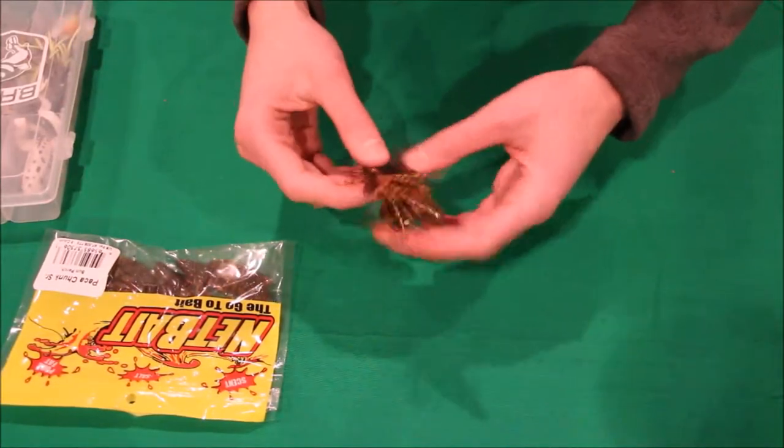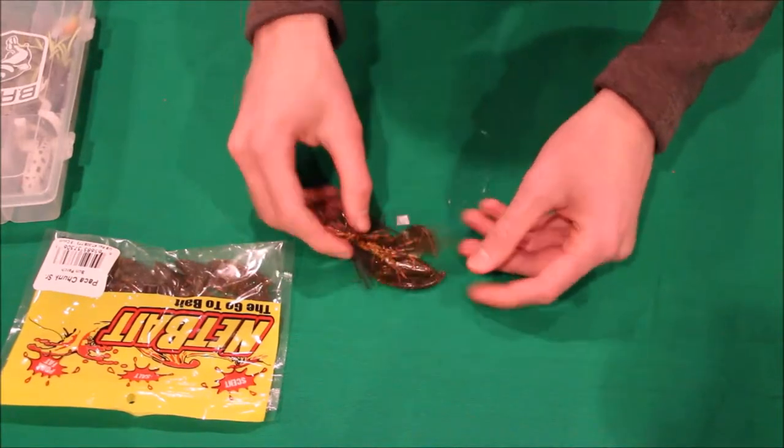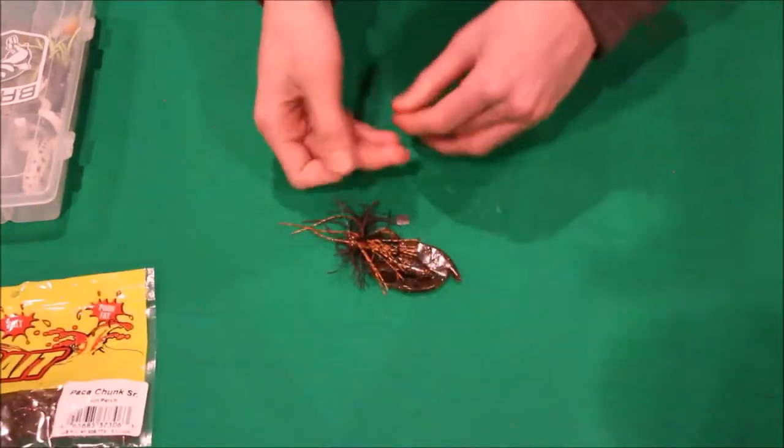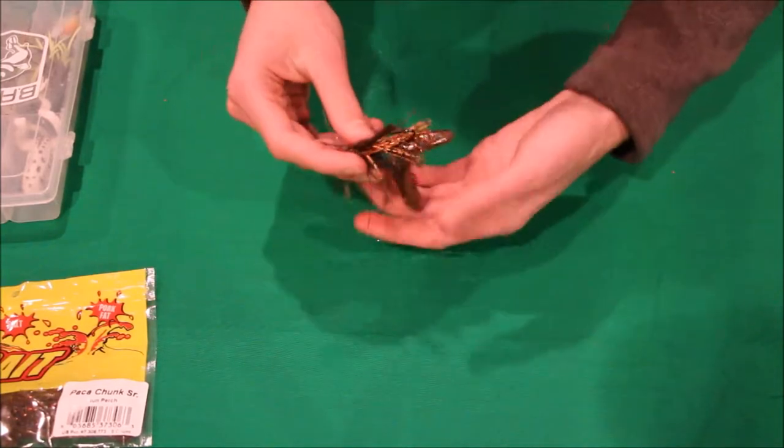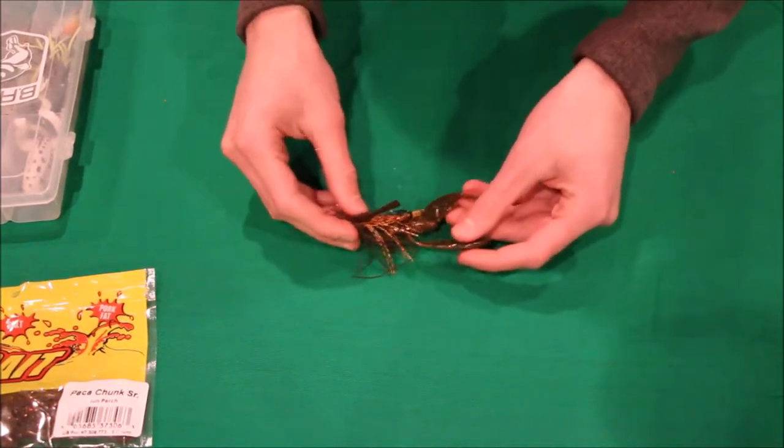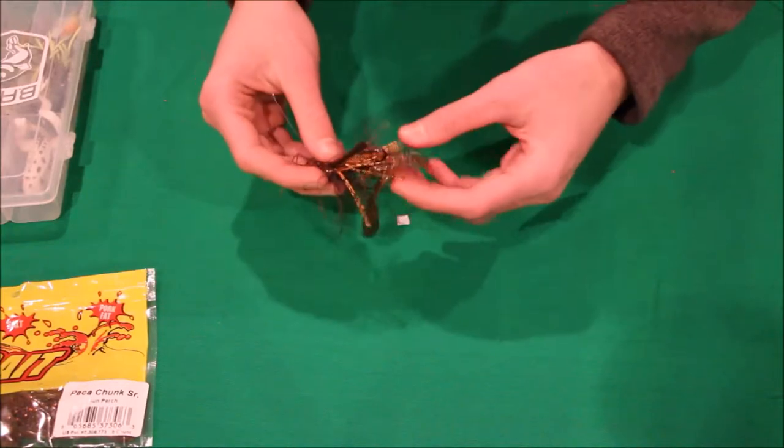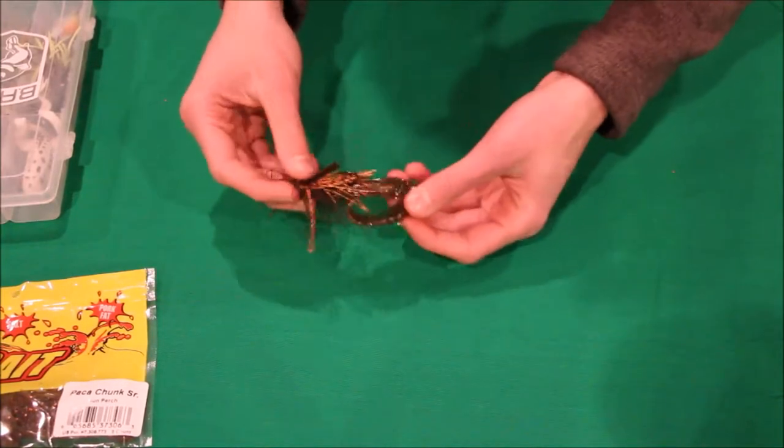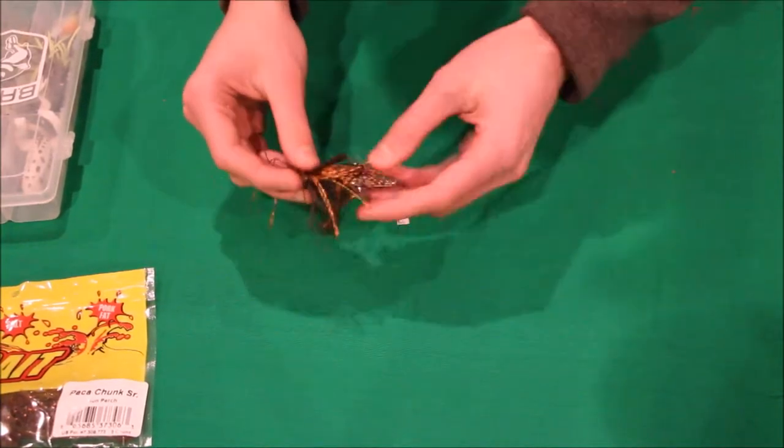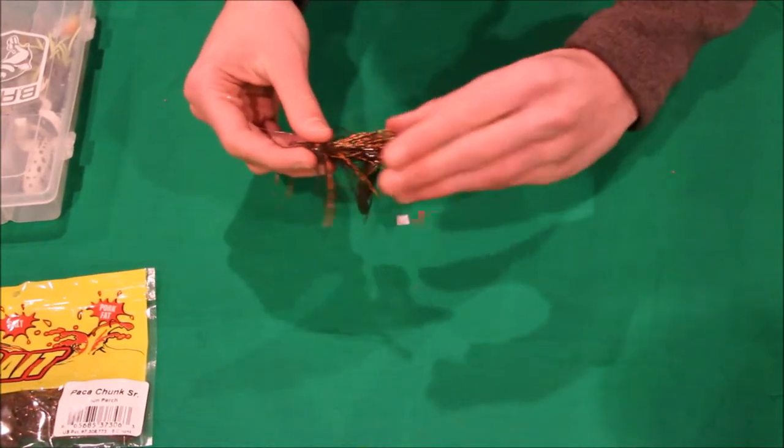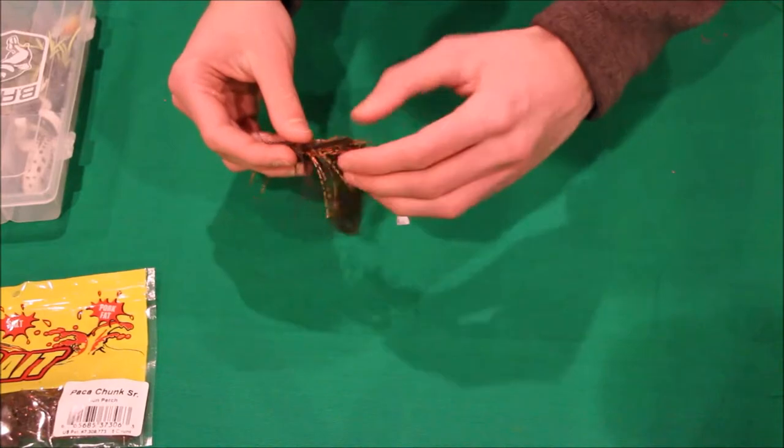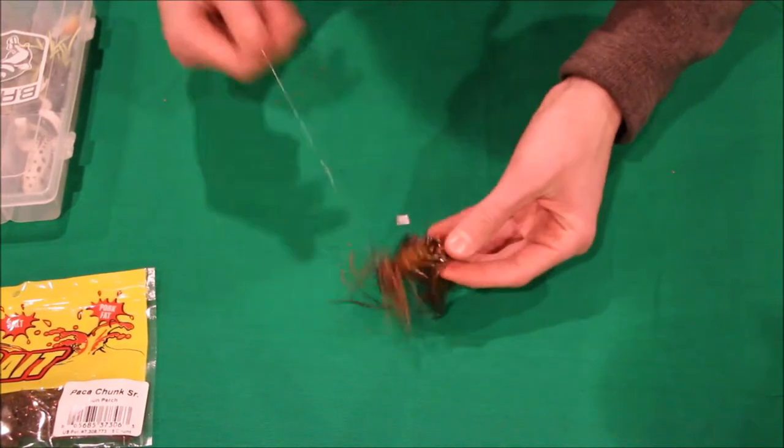You can put it on the other way too, with this end first, but I think this way is a little better because it'll be trailing behind. If the claws are up higher, then the fish will have a better chance of biting the middle instead of the back, and you'll have a better hookup ratio. That means you'll catch more fish.